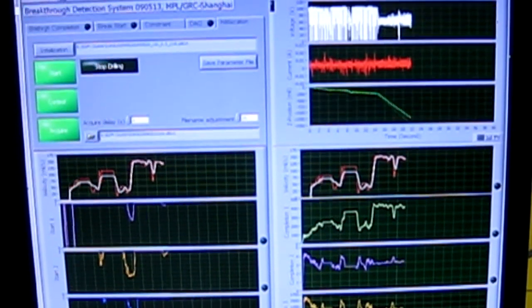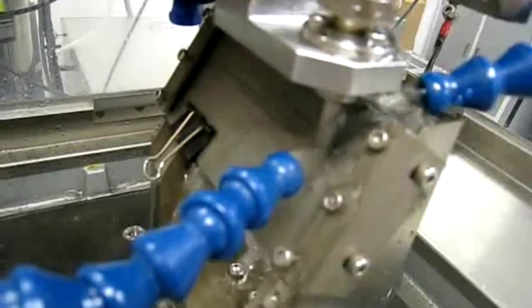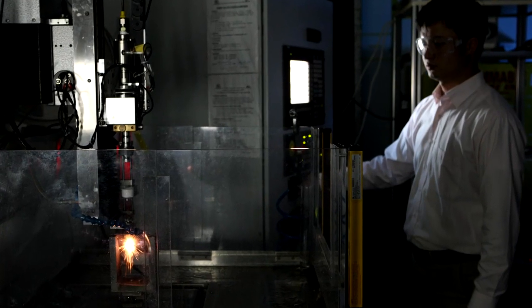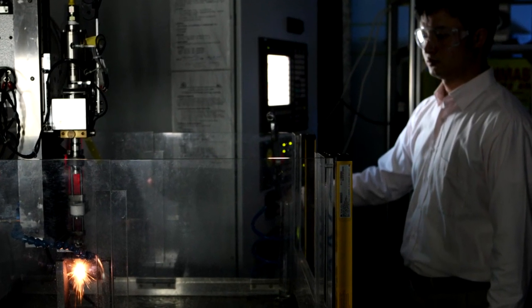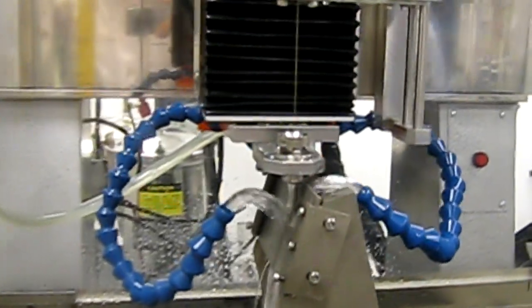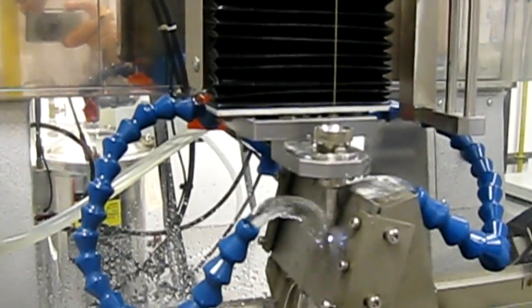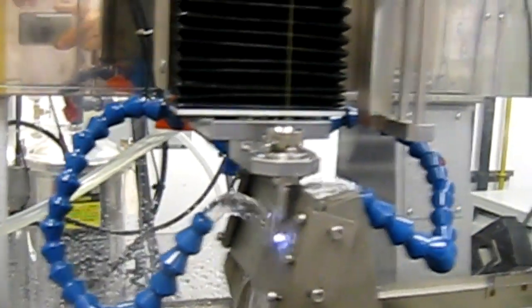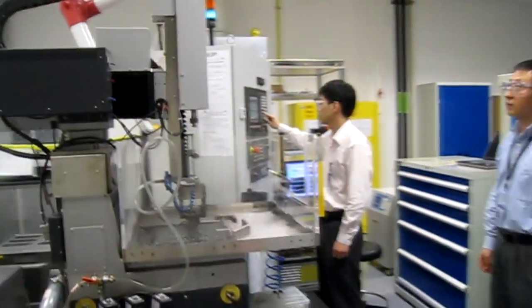Since we are drilling the cooling hole in superalloy, which is very hard, we actually use electro discharge. For mechanical drilling, it never worked for the small hole at high speed. Electro discharge machine actually uses two electrodes. When you put a high voltage across, you basically create a spark. The spark actually erodes the metal.